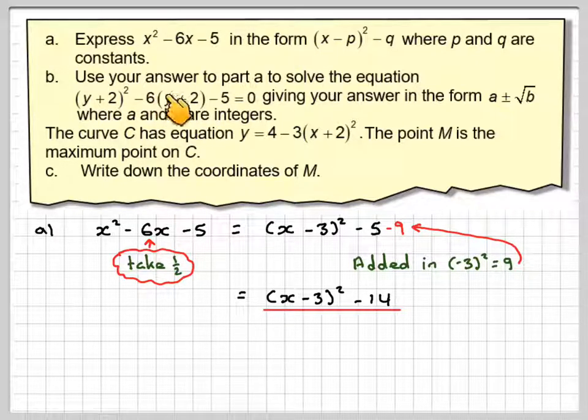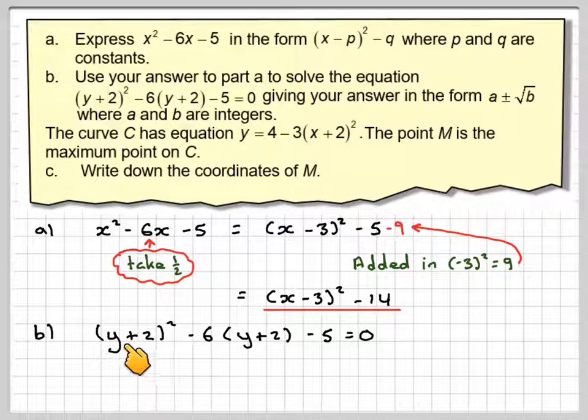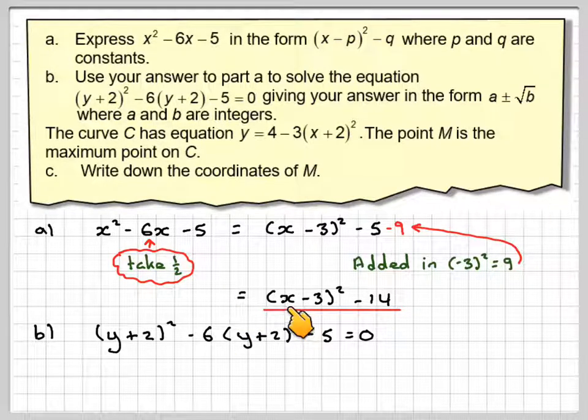Right, we now need to use our answer to solve this equation. Now, you might have noticed that if this was x, this would be x² - 6x - 5. So all we need to do is put y + 2 instead of x in here.